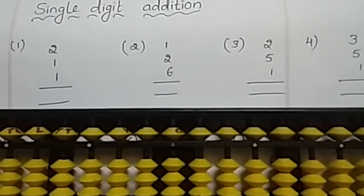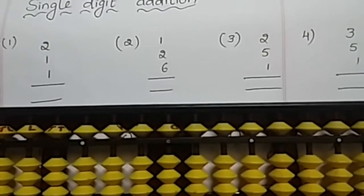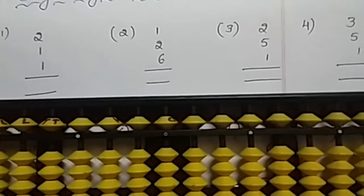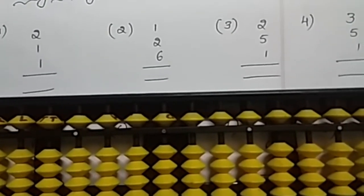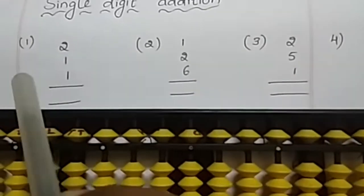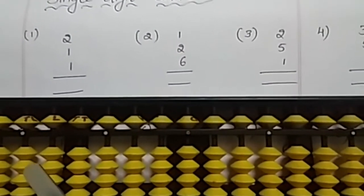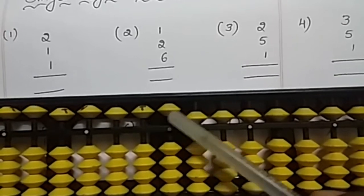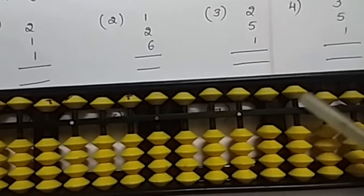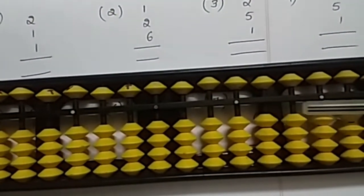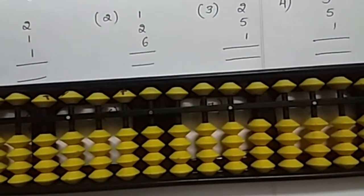Hi my dear students, in this video we are going to study how to do single digit addition on abacus. Here are some questions we will do step by step. Before going to do the addition, set the abacus to zero position. All the upper beads should be upwards, all the lower beads should be downwards. This is the zero position.